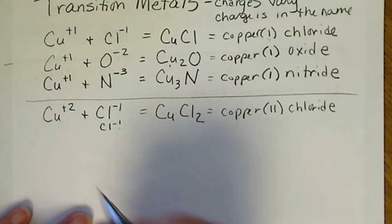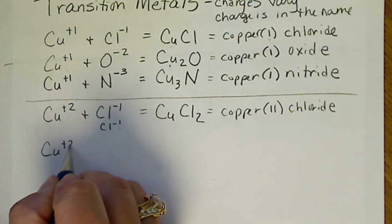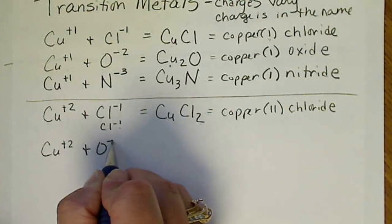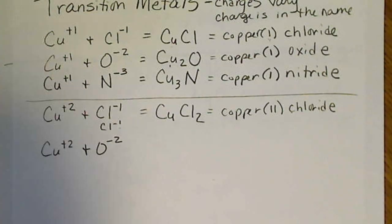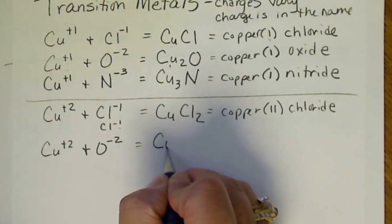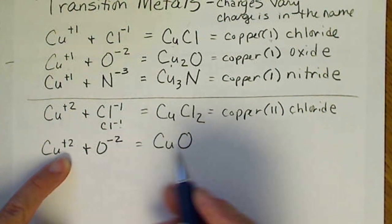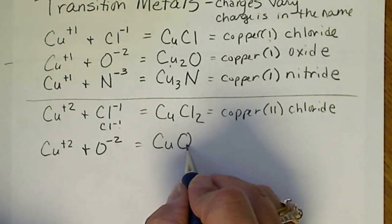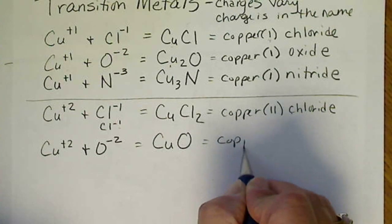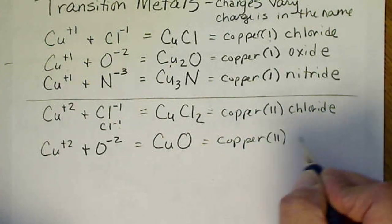Okay? Let's put copper plus 2 with an oxide ion of oxygen. This will be CuO. Those charges already cancel to zero. And so that ratio is 1 to 1. And this is copper 2 oxide.